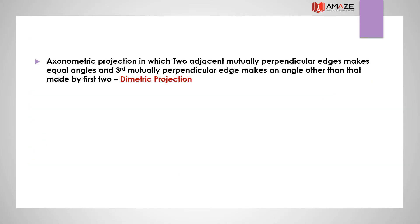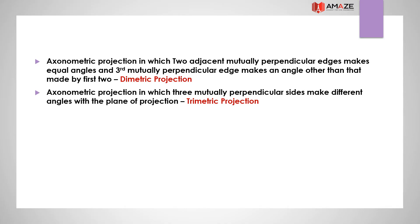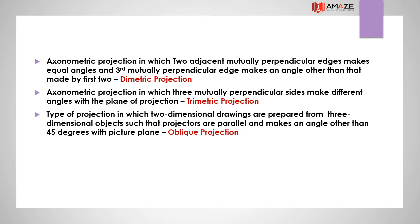An axonometric projection in which two adjacent mutually perpendicular edges make equal angles and the third mutually perpendicular edge makes a different angle is called dimetric projection. Axonometric projection in which all three mutually perpendicular sides make different angles with the plane of projection is called trimetric projection.